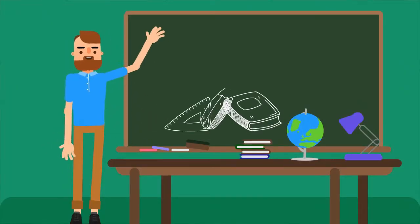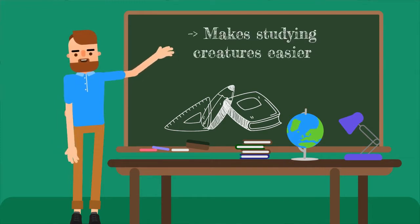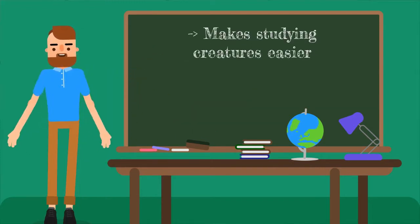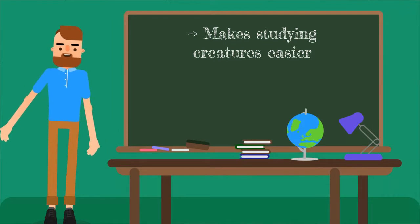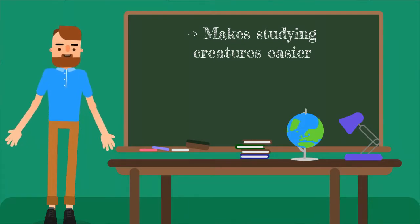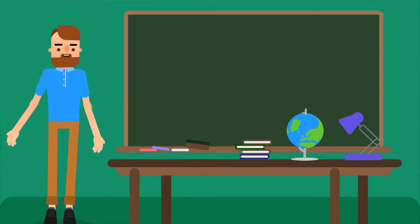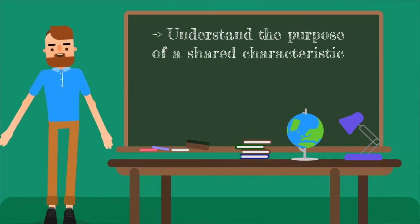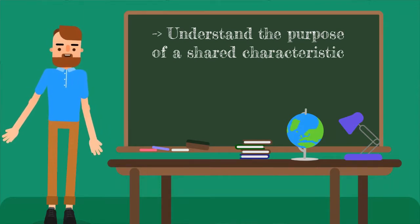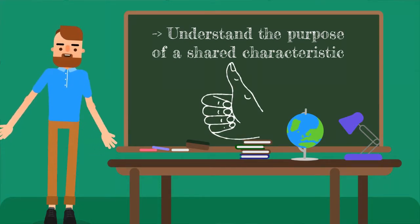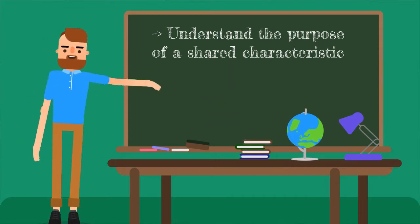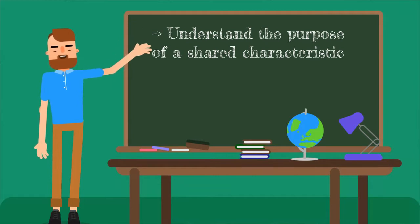Now, why is taxonomy important? First, taxonomy helps us to categorize organisms so we can more easily study, understand, and communicate information — it just makes it easier to handle the wealth of information we're pulling in. Another reason is it helps us to understand the unique characteristics of an animal or a plant before we ever get into an in-depth study — we already understand some of its basic characteristics.